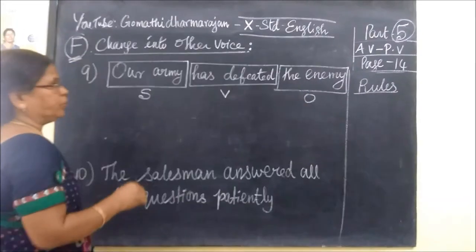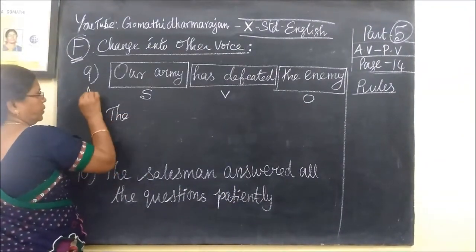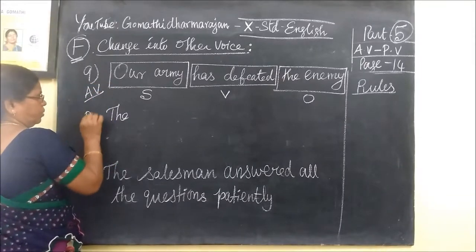So how do we call the enemy object? The enemy is the subject. So how do we call it active voice? Active voice?